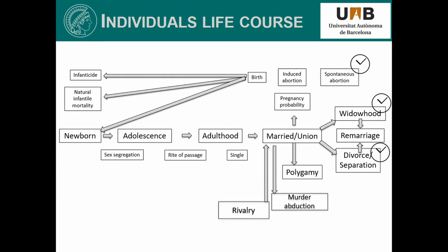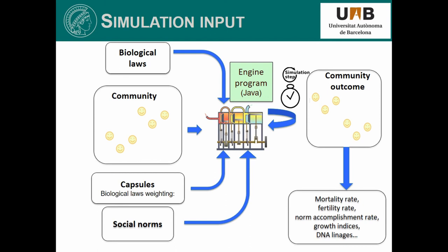We work with a multi-agent based system program developed by a colleague from Girona, Adria Vila Moreno. The program simulates demographic scenarios and the different social and biological constraints taken from the sources mentioned. Basically, we have different input files containing the different biological constraints, the virtual community with individuals taking part in the simulation, biological laws weighting the biological environment, and finally the social norms collected from the sources. This simulation program works in steps — we ask the program how many steps to simulate and every step equals one year. So if we ask for 300 steps, we get a 300-year demographic process. At the end of the simulation, we obtain different output files from which we can analyze the demographic process.